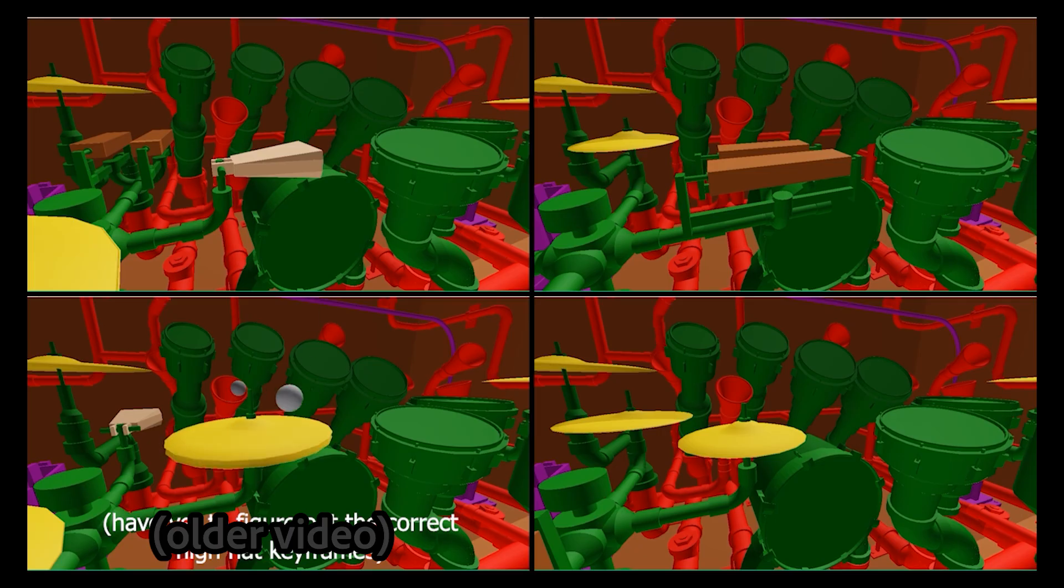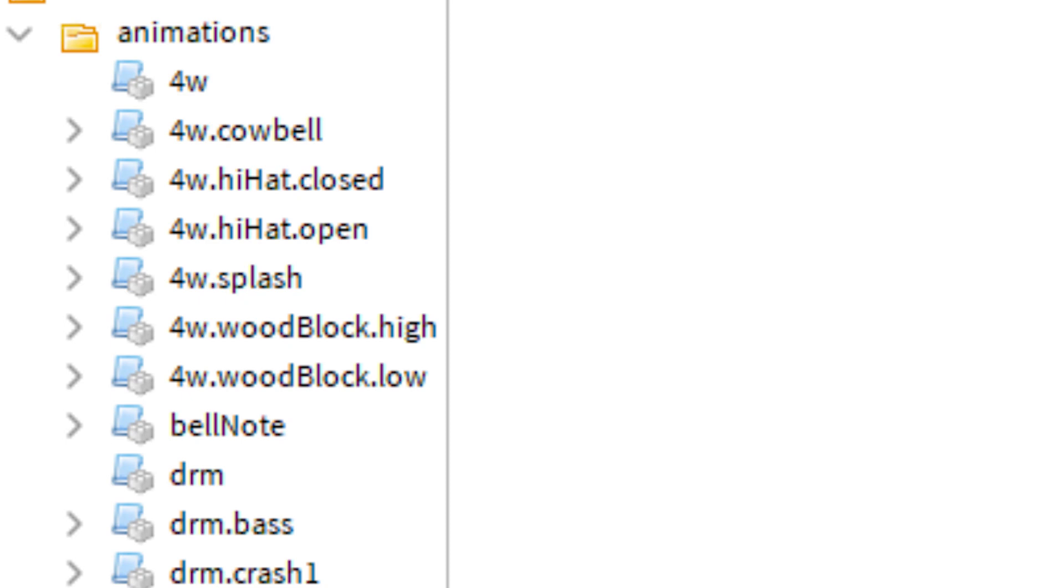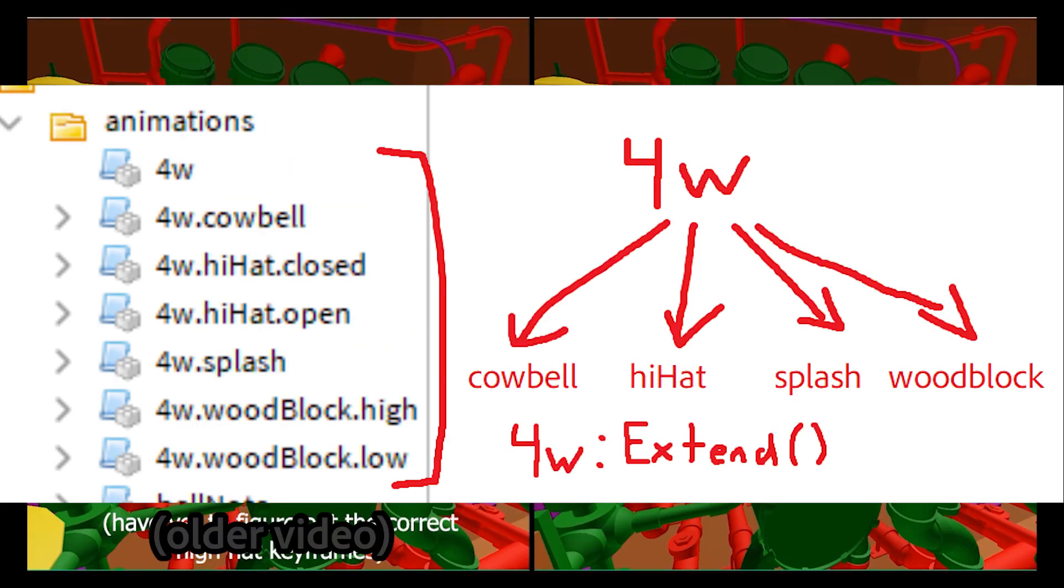Object-oriented programming also allows me to extend classes off one another. For example, this base four-way percussion class is called 4W, and from there, we use our other animations to extend off of it, which means it's the exact same class, but modified slightly.